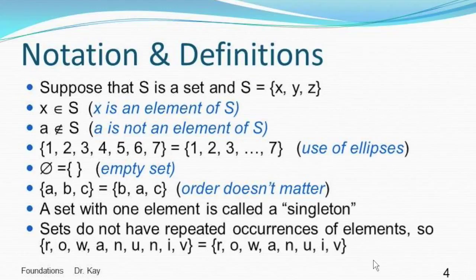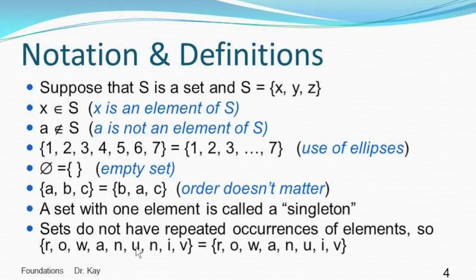I'm trying to stick as closely to your book as possible. While everybody says sets do not have repeated occurrences of elements, the book allows writing the set r, o, w, a, n, u, n, n, i, v — but what this really represents is the same set where the element n only occurs once. There are no repeated elements in a regular set, so this is equivalent to the simplified version.